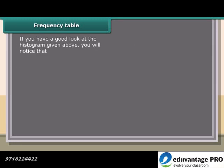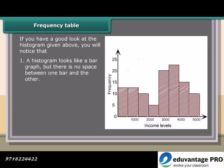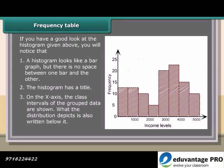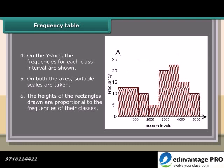If you have a good look at the histogram given above, you will notice that: A histogram looks like a bar graph but there is no space between one bar and the other. The histogram has a title. On the x-axis, the class intervals of the grouped data are shown. What the distribution depicts is also written below it. On the y-axis, the frequencies for each class interval are shown. On both the axes, suitable scales are taken. The heights of the rectangles drawn are proportional to the frequencies of their classes.